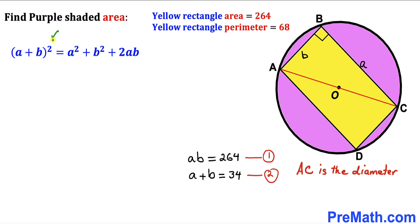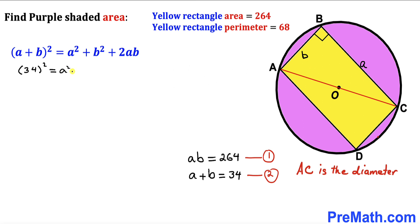Now let's recall the famous identity: (a + b)² equals a² plus b² plus 2ab. We know that a times b equals 264 and a plus b equals 34. Substituting, we get 34² equals a² plus b² plus 2 times 264, which gives us 1156 equals a² plus b² plus 528.